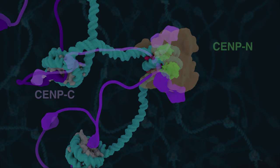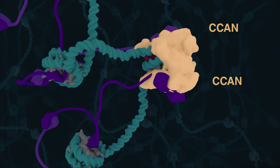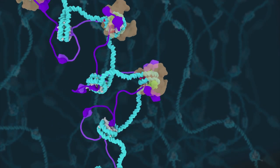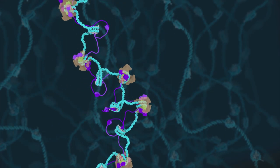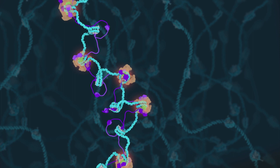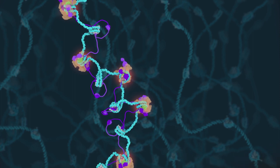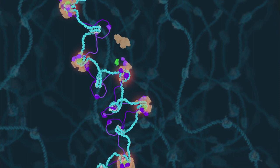They are each required for the recruitment of other constitutive centromere proteins, resulting in a symmetric arrangement with binding sites occupied on each face of the nucleosomes. Connections to neighboring nucleosomes are made through a second nucleosome binding domain on CENP-C.